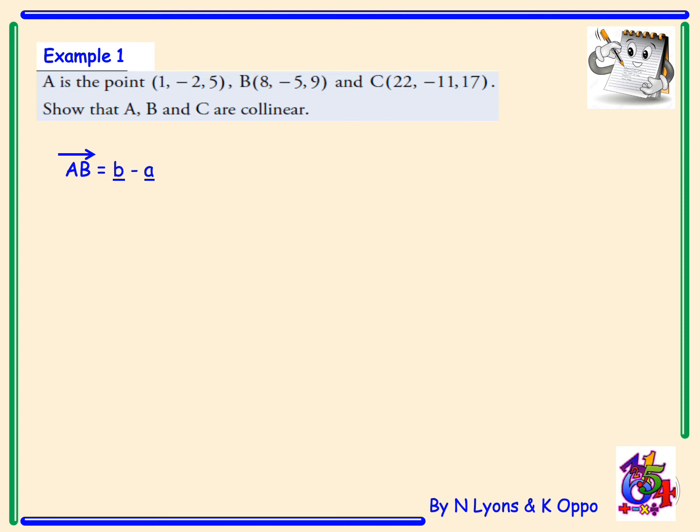Which is B minus A: (8, -5, 9) subtract (1, -2, 5), which gives the vector AB as (7, -3, 4).